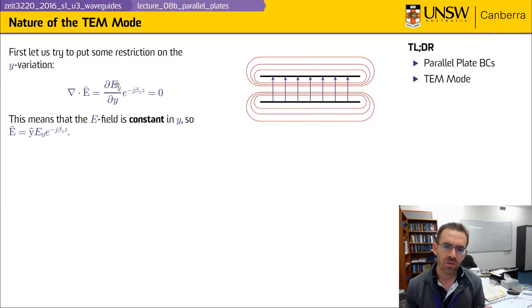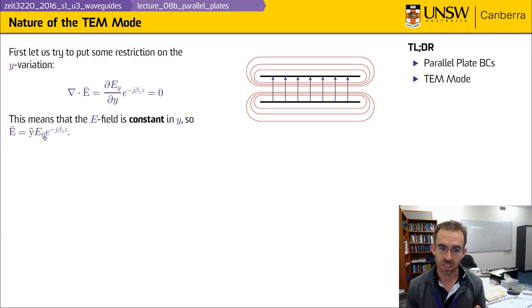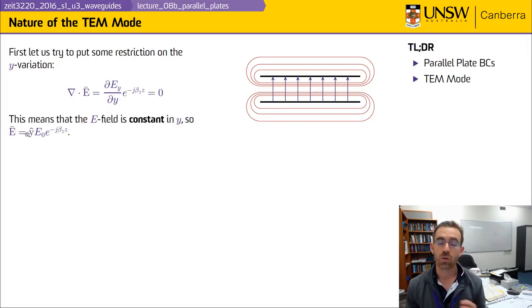This is only true if the electric field is constant as a function of y. So we can say that the electric field has some amplitude E0, propagating like e to the minus j beta_z times z, and is oriented in the y direction.